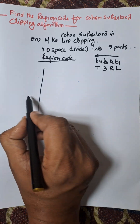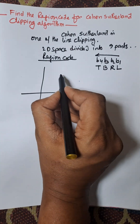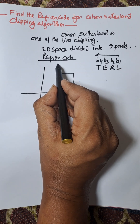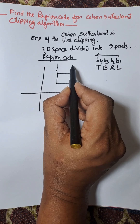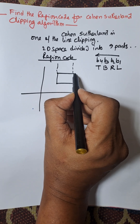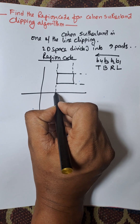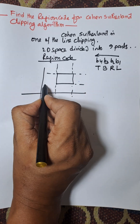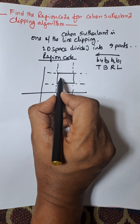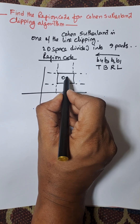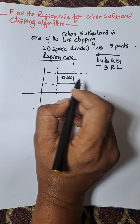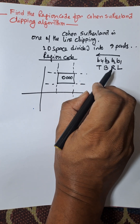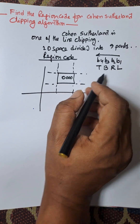Suppose this is the region, and we need to divide this region based on this viewport. Initially, the center region consists of 0, 0, 0, 0 — because this case it is not either left, right, top, or bottom.